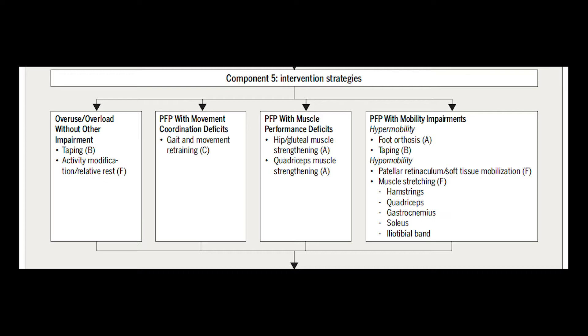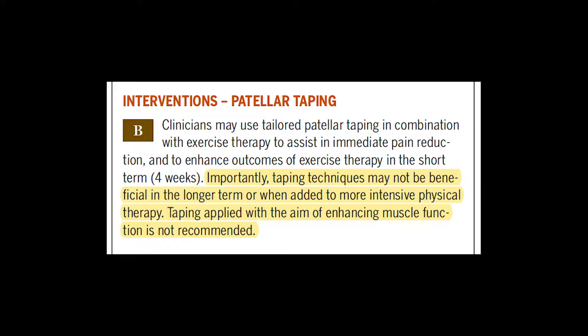Now, what do we actually do about it? We have a ton of adjunct or passive treatments to help with symptom reduction in physical therapy — things like massage, mobilization, taping, ultrasound, and e-stim. This paper goes into each treatment and makes a recommendation based on current research. For taping, they say only in the short term, up to four weeks, in combination with therapeutic exercise.